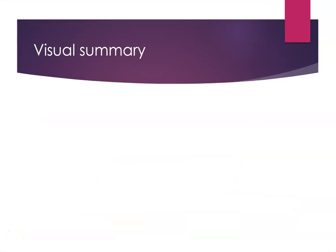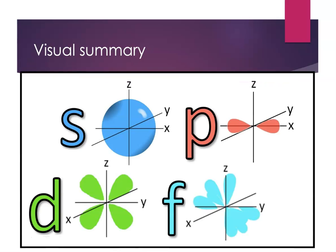Here's just a little visual summary. Make sure you can draw S, P, and D-orbitals and recognize F-orbitals: spherical S-orbitals, dumbbell-shaped P-orbitals, cloverleaf-shaped D-orbitals, and F-orbitals — they just are what they are. In case you were wondering why we chose the letters S, P, D, and F — the spectroscopists had descriptive terms for the data they were collecting, and the first letter of those terms are what led to S, P, D, and F.